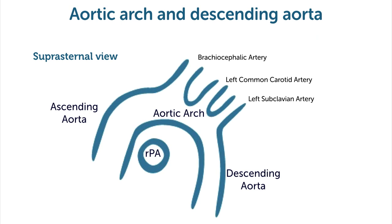This is a view that works best in young individuals. In elderly patients it's sometimes a little bit more difficult. What you see is the aortic arch here with the ascending aorta and then the descending part. Here we can also measure — we would measure for example here or here, and sometimes we're even able to measure parts of the descending aorta.